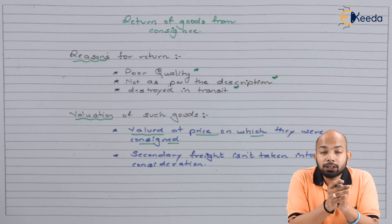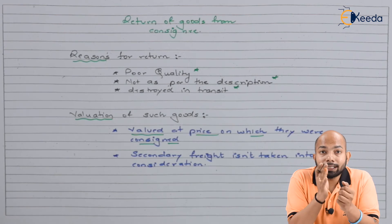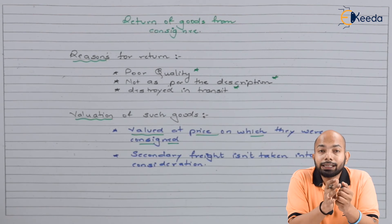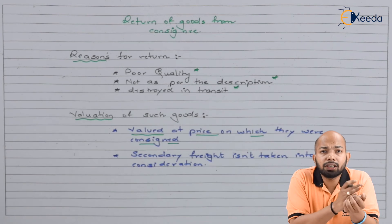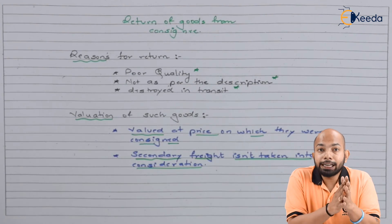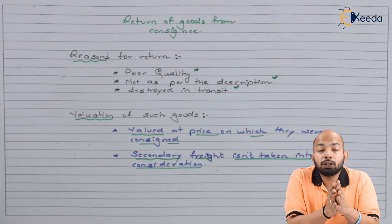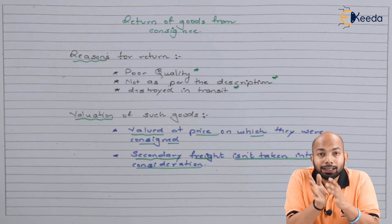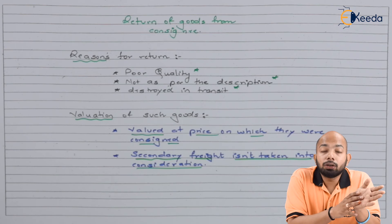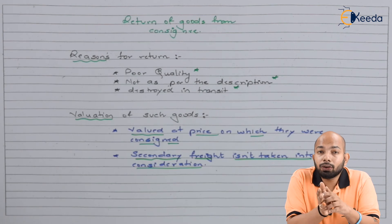The other part is that secondary freight isn't taken into consideration. Secondary freight means the cost the consignee incurs in sending those goods back to the consigner. This isn't taken into consideration.